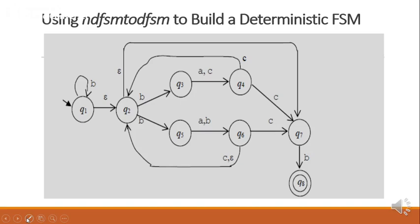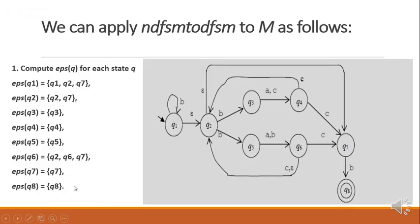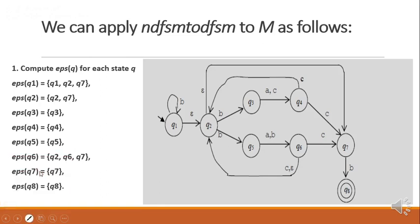Here we will consider an example to build a DFSM from NDFSM. The first step is to compute epsilon closure of Q for each state present in the NDFSM. First, we will find epsilon closure of Q1. From Q1, taking epsilon transition, we can get Q2, and from Q2 taking a transition on epsilon, you can get Q7. No further transitions can be added.